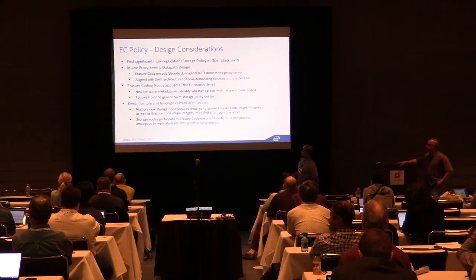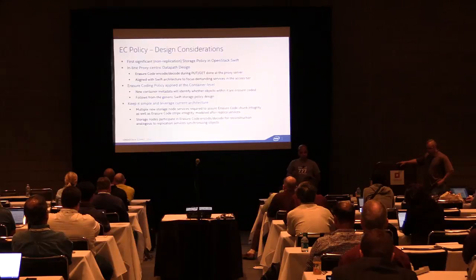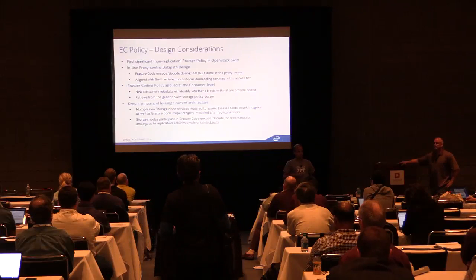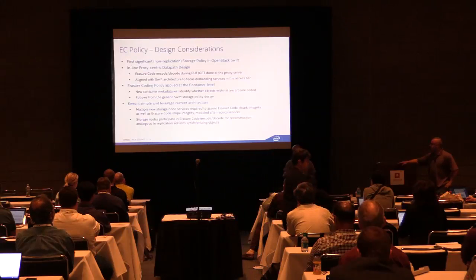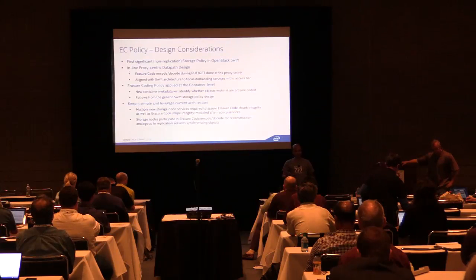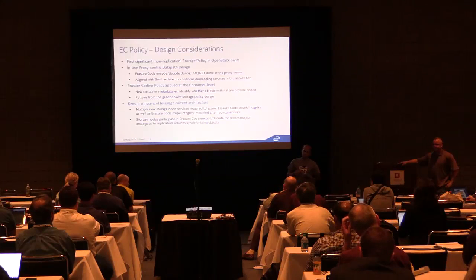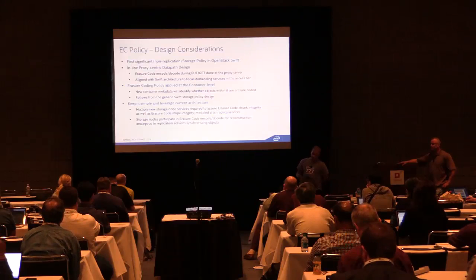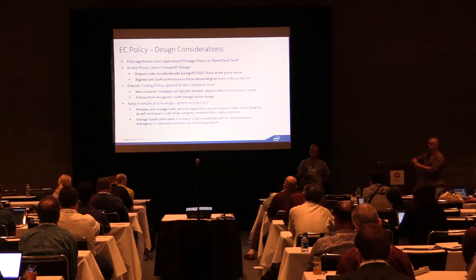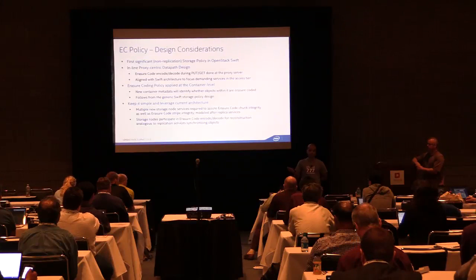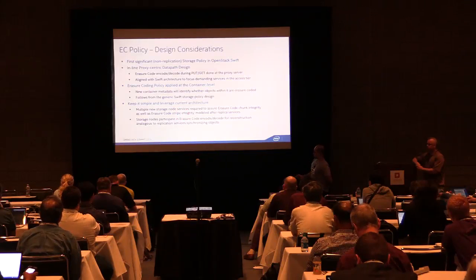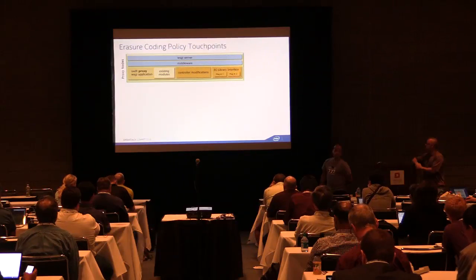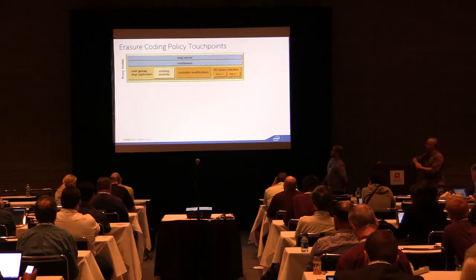Erasure coding comes with a higher compute cost, which makes an inline encode design more suitable because the proxy is the focus of demanding services in Swift — that's where you're likely to find more compute power, as opposed to storage nodes. Leveraging the current architecture, we essentially chose to leverage the current Swift auditor and change the replicator to be the erasure coding reconstructor. Here is a snapshot of what we had to change in the proxy nodes and storage nodes to make Swift erasure-coding aware, including changes to the object controller, the WSGI application, and additional metadata handling.